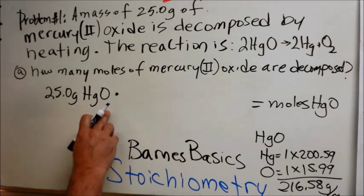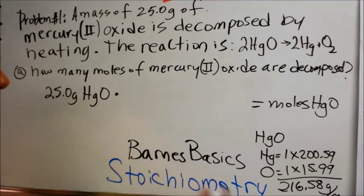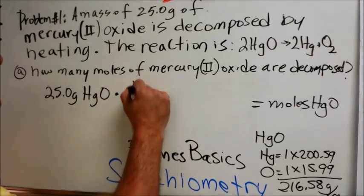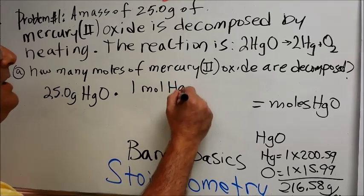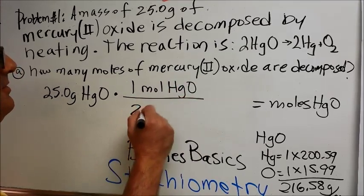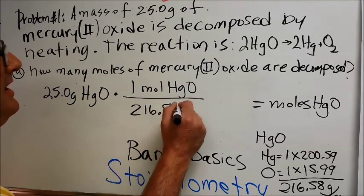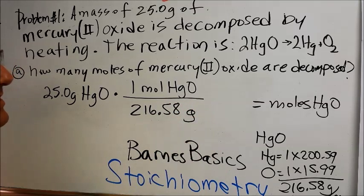Now, if we have grams of mercury oxide on the top, then we're going to make sure in this ratio, one mole of mercury oxide is the same thing as 216.58 grams. We just decided that because we got the formula weight of that.